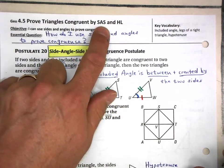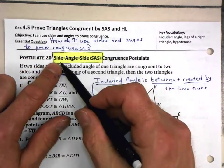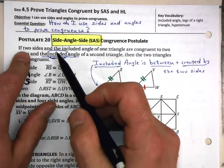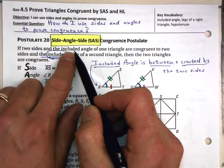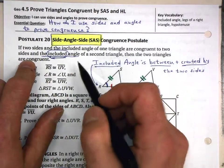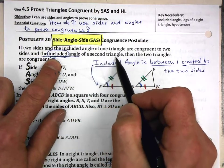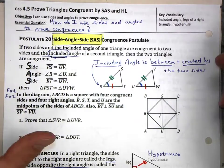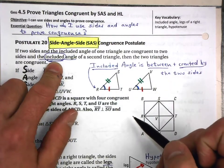SAS — what does that mean? It stands for Side-Angle-Side; it's an acronym. The theorem says that if two sides and the included angle of one triangle are congruent to the two sides and the included angle of a second triangle, then the two triangles are congruent. The key emphasis here is on the word "included" — it has to be your included angle.